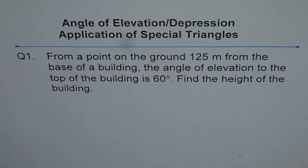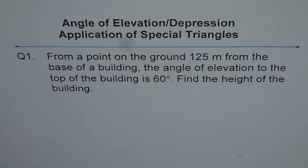Question 1: From a point on the ground 125 meters from the base of a building, the angle of elevation to the top of the building is 60 degrees. Find the height of the building.